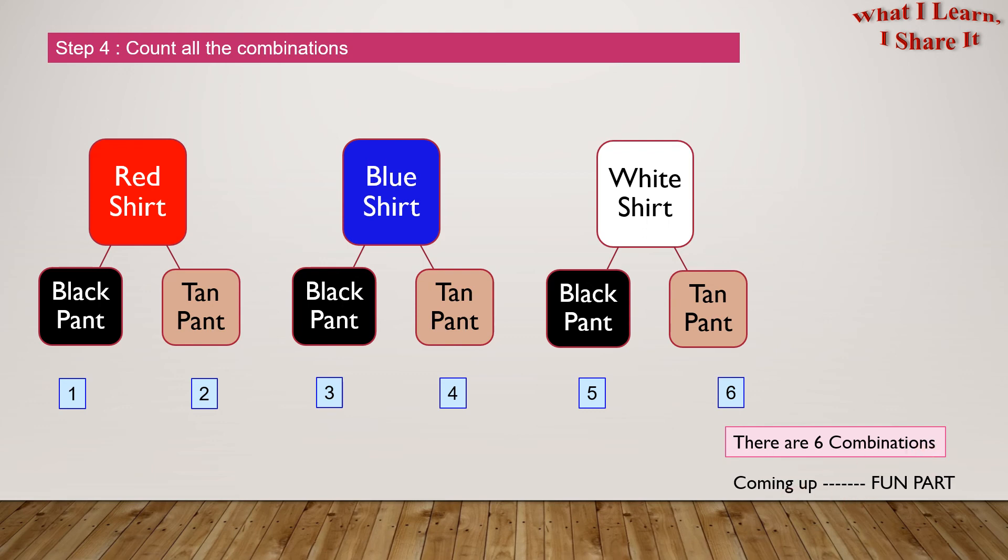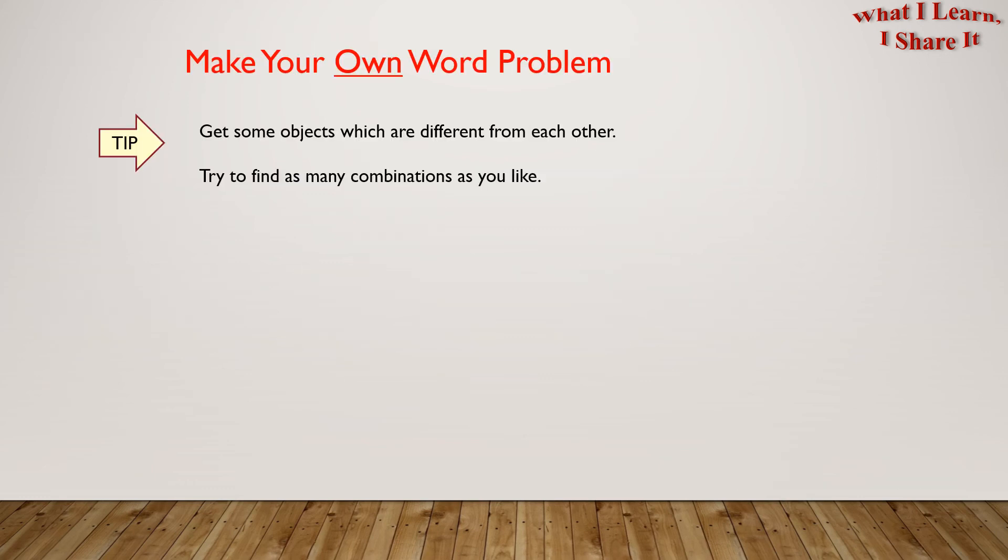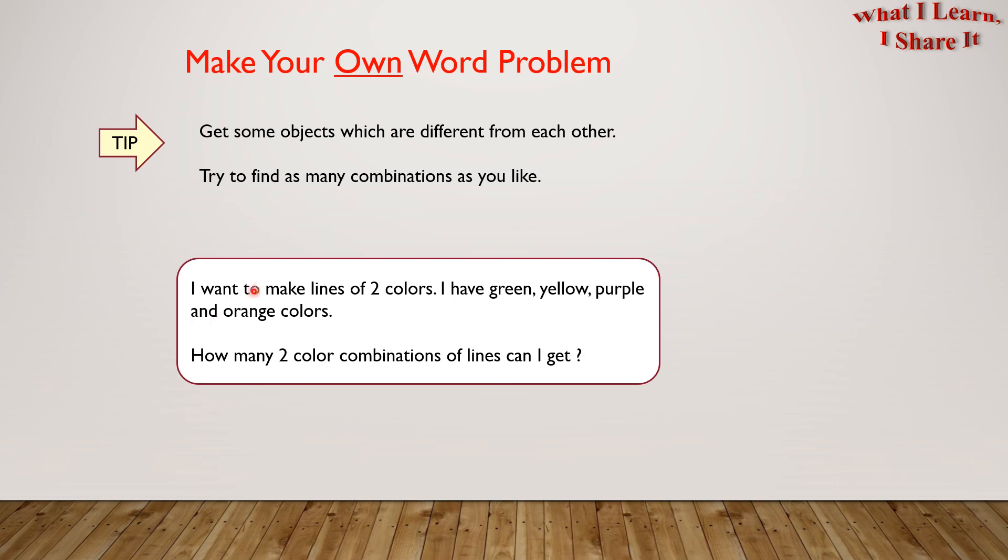Coming up is the fun part, and that is make your own word problem. Here is a tip: Get some objects which are different from each other. Try to find as many combinations as you like. Here is an example. I want to make lines of two colors. I have green, yellow, purple, and orange colors. How many two color combinations of lines can I get? Hope you'll have fun making your own word problems!